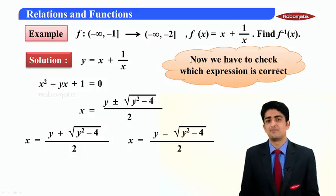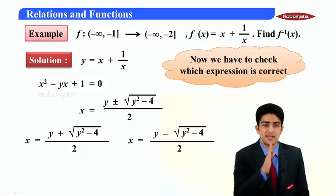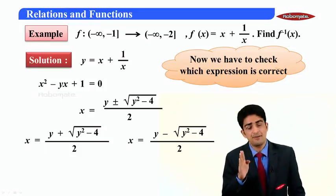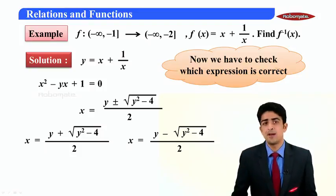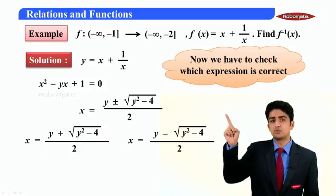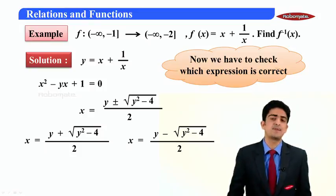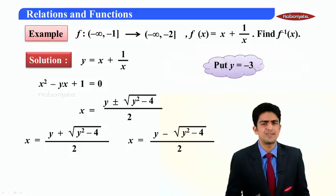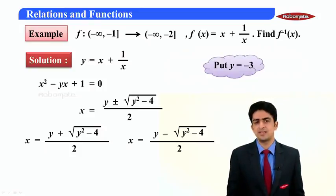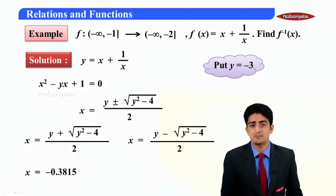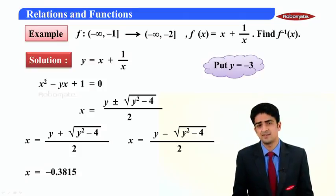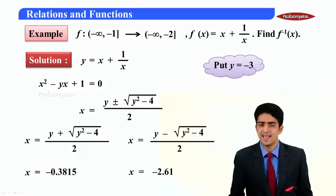Now we will use if f is from A to B, f⁻¹ is from B to A. So f⁻¹ should be from (-∞,-2] to (-∞,-1]. So taking y equal to -3, we find x. We get x equal to -0.3815 in this case, approximately -0.38 and -2.61 in this case.